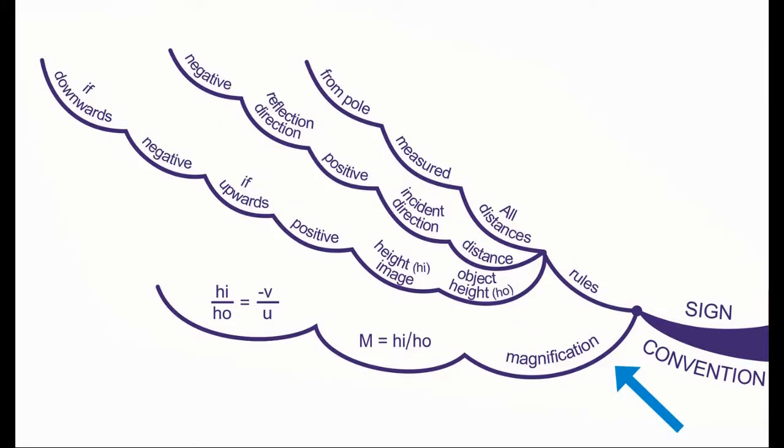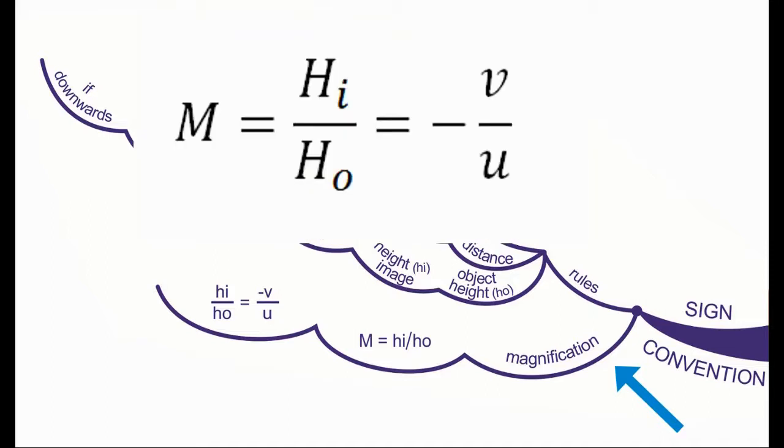Magnification is represented by capital M and is given by the formula capital M is equal to HI by H0, which is also equal to minus V by U.